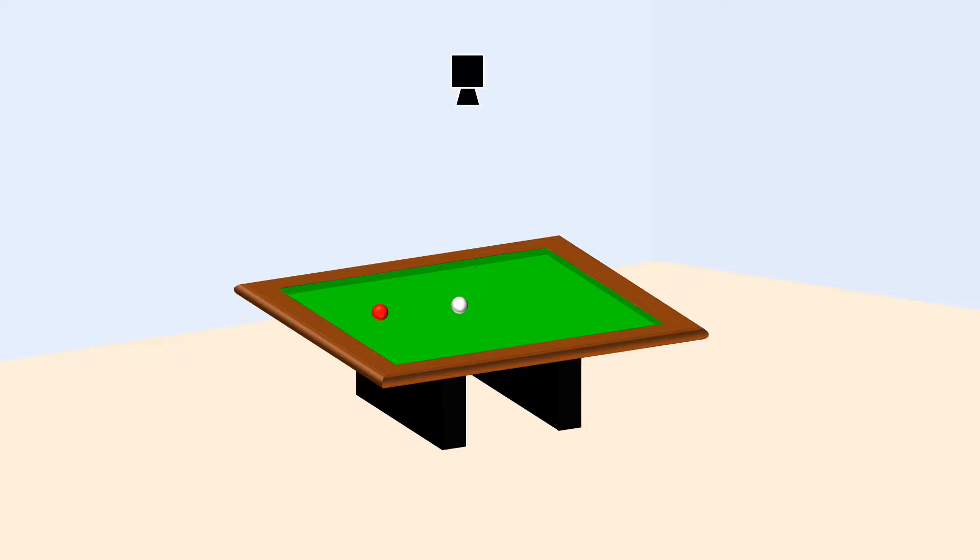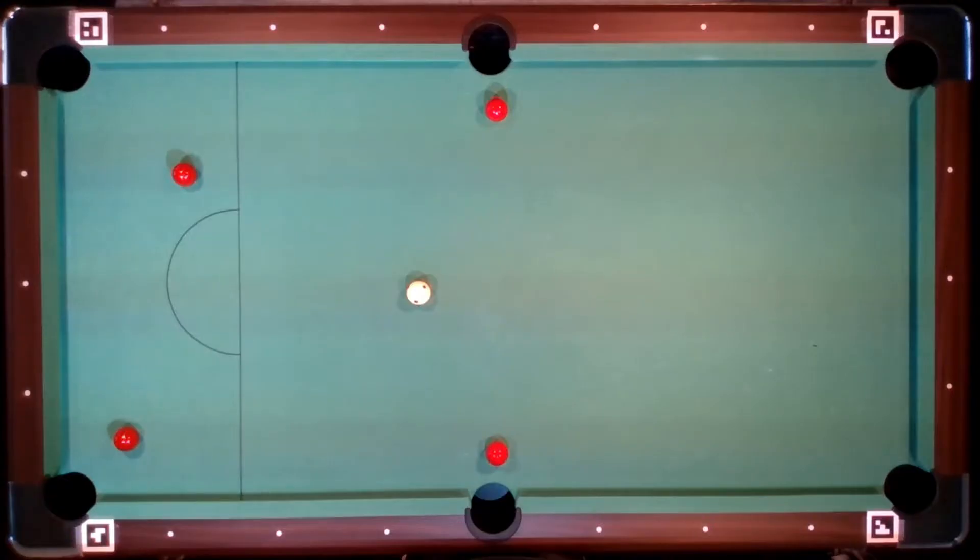First of all, a camera and a projector are mounted over a pool table. The projector displays information for the player directly on the table. The camera records the current game situation. The position and color of each ball are recognized and displayed.